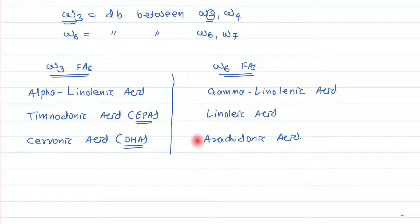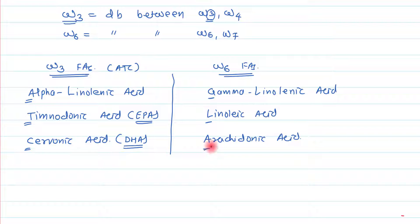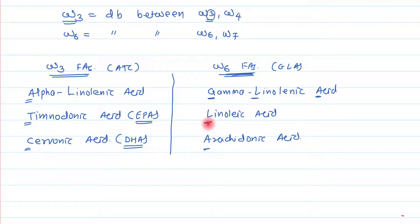Students often have confusion about which fatty acid belongs to which group — omega-3 or omega-6. There is a nice memory trick: remember ATC — A for alpha-linolenic acid, T for timodonic acid, C for cervonic acid — these are omega-3 fatty acids. GLA is omega-6: G for gamma-linolenic acid, L for linoleic acid, and A for arachidonic acid. This way you can easily remember which fatty acid belongs to which omega group.